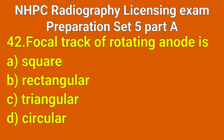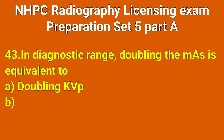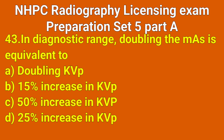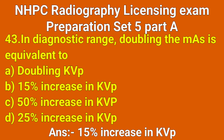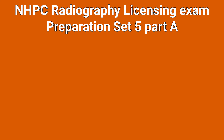Question number 43: In diagnostic range, doubling the mAs is equivalent to which option? Correct answer: option B, 50% increase in kVp. Question number 44: The most effective way to reduce motion unsharpness is which option? Correct answer: option C, reduce exposure time.